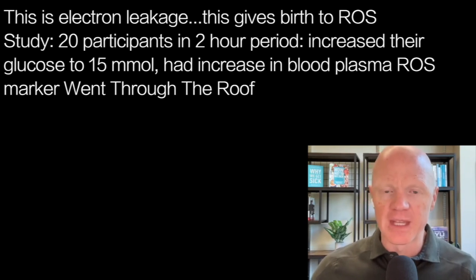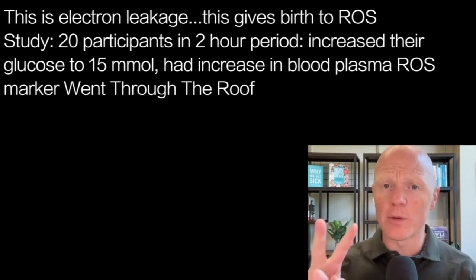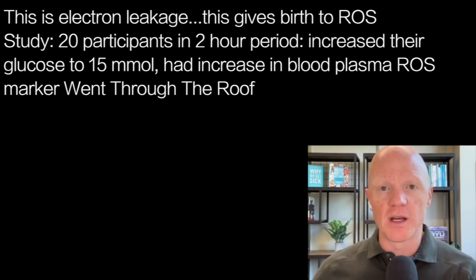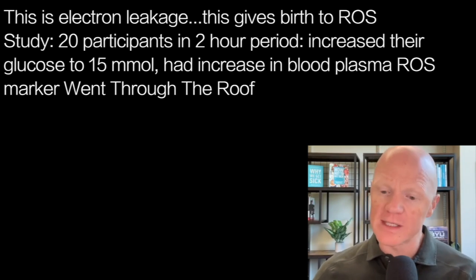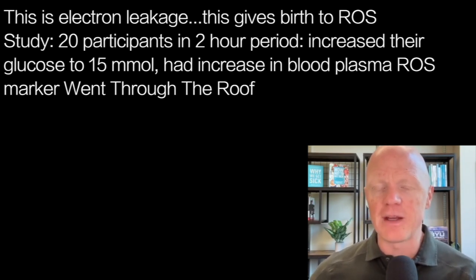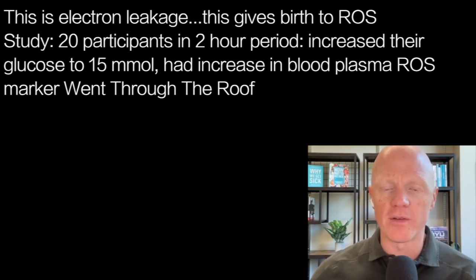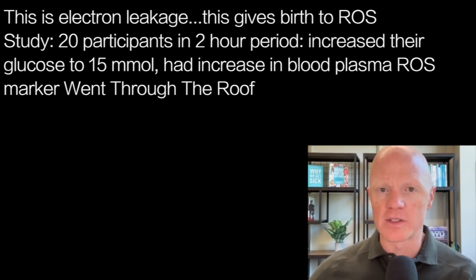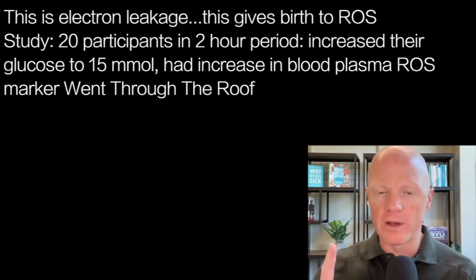That's a direct effect of hyperglycemia. A study I've linked here had 20 participants who, in just over a two-hour period, increased their glucose levels to 15 millimolar — which is high, but absolutely not impossible to reach. They measured a plasma marker of oxidative stress called nitrotyrosine, and it skyrocketed. This direct marker of oxidative stress went through the roof from just one single bout of hyperglycemia.